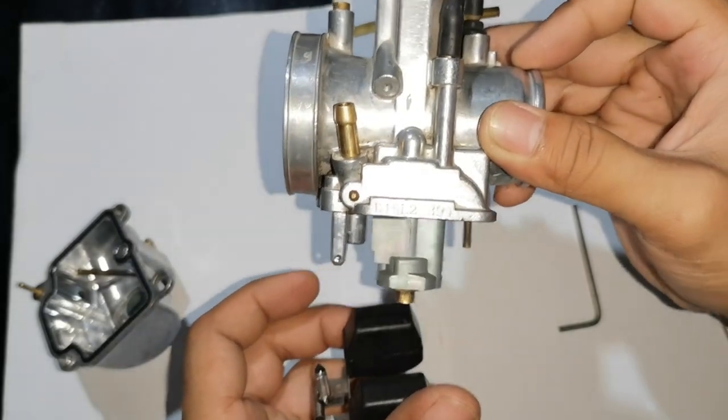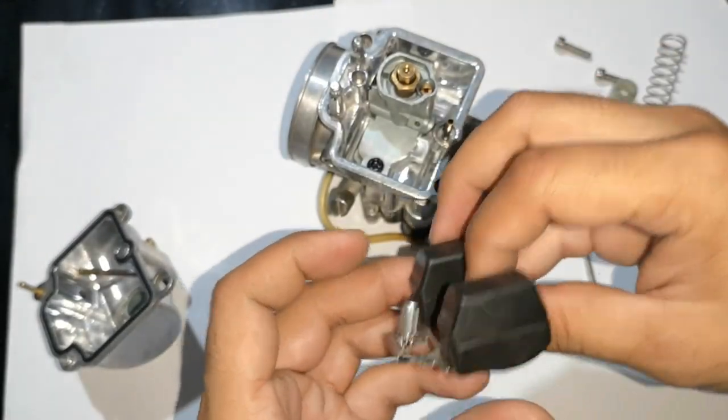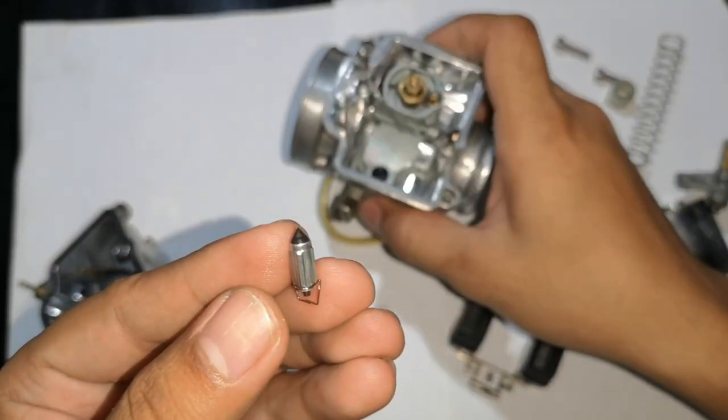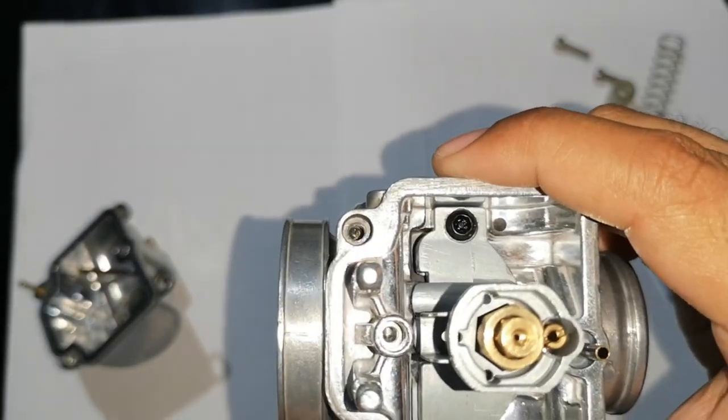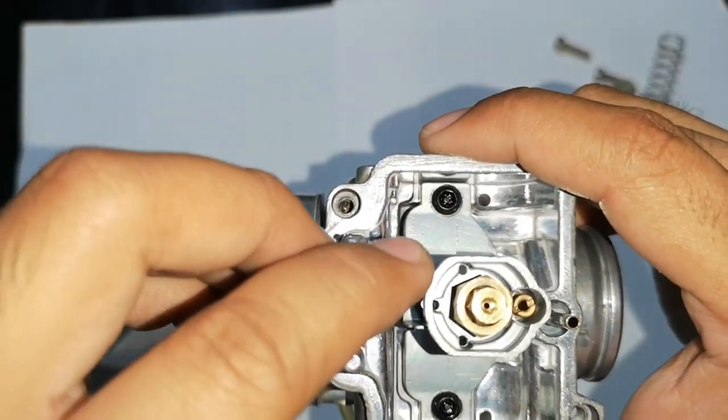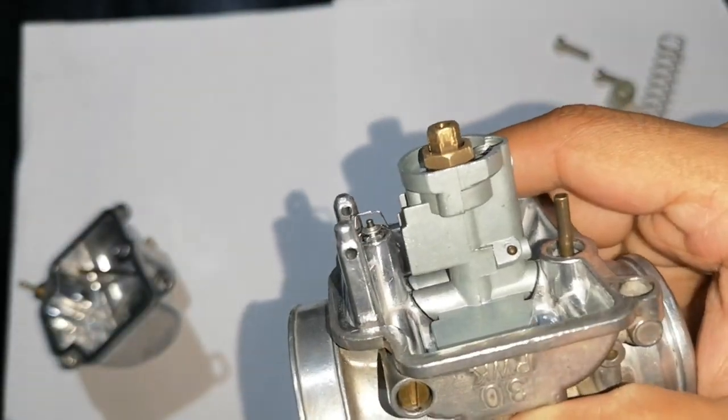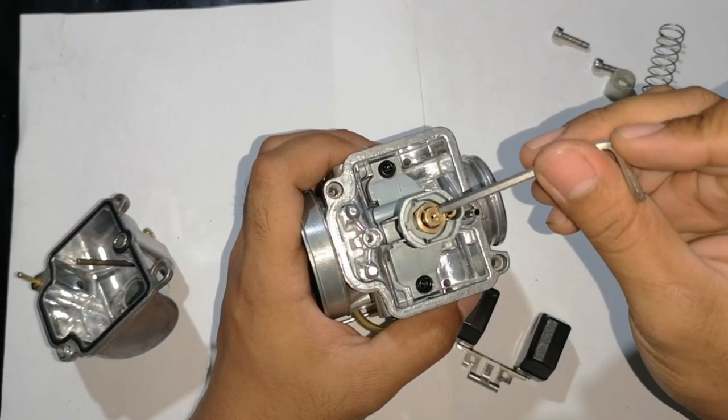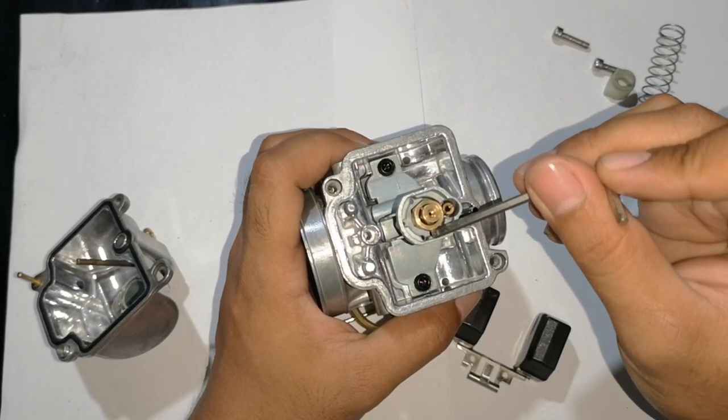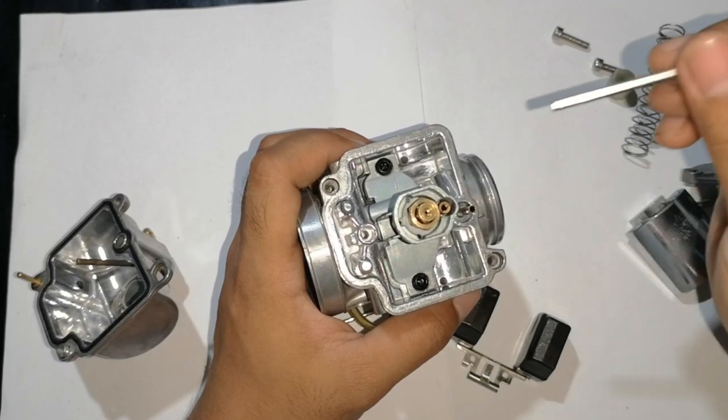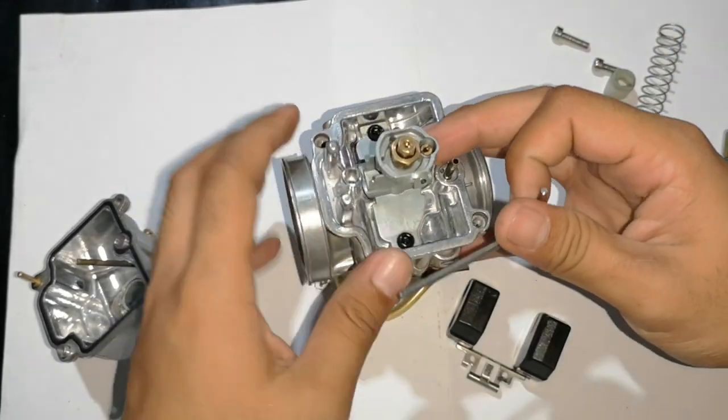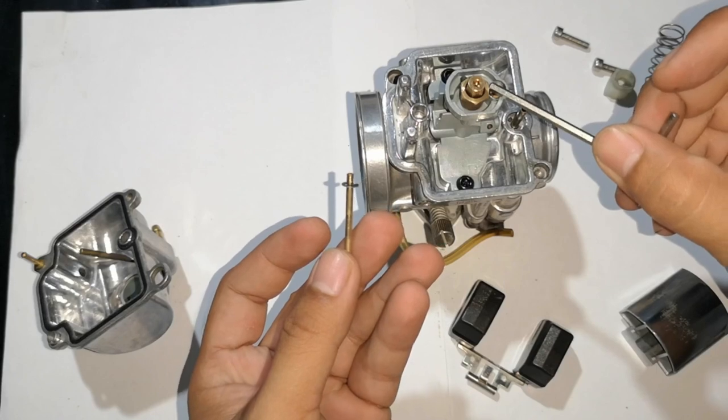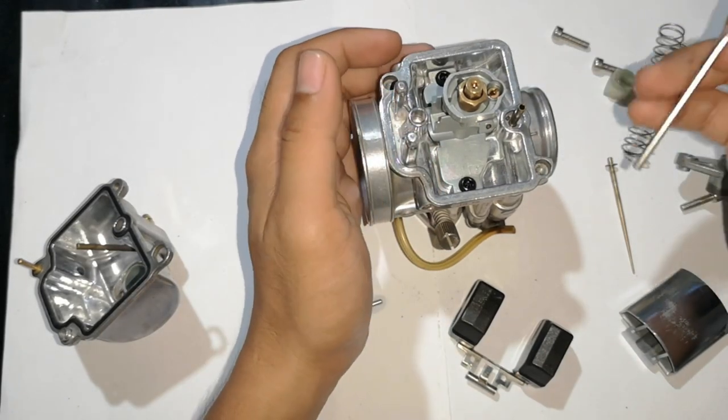So, tingnan natin. So, ito ang itsura na needle valve. Yan. So, ito siya ang nagtatabon dito. Ito, dito. Yan. Dito naman, ito yung pilot jet. Ito naman, yung main jet. At ito yung fuel atomizer or needle jet. So, magkaiba po ang jet needle sa needle jet. Ito po ang tinatawag na jet needle. Ito ang needle jet. I-discuss natin kung ano ang function nila mamaya pagkatapos.